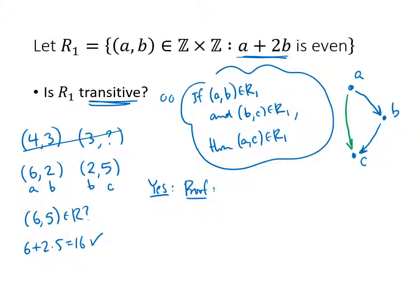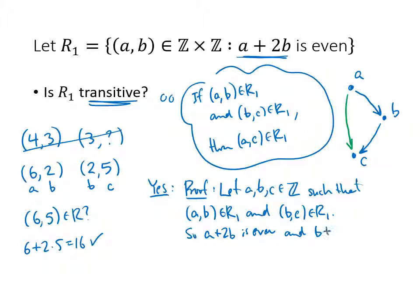We're proving an if-then, so just like we do any time we prove an if-then, we're going to start by making the hypothesis true. We're going to let a, b, and c be integers such that my hypothesis is true. (a, b) is in my relation R1, and (b, c) is in my relation R1. What does that mean? Well, that means that a + 2b is even, and b + 2c must also be even.